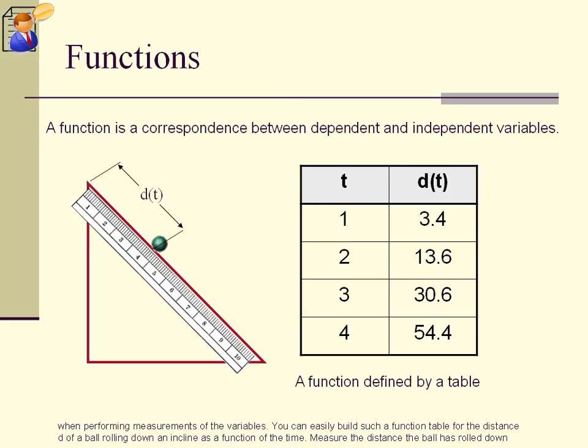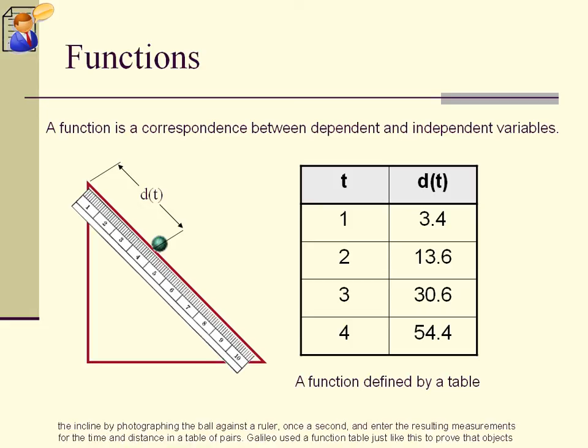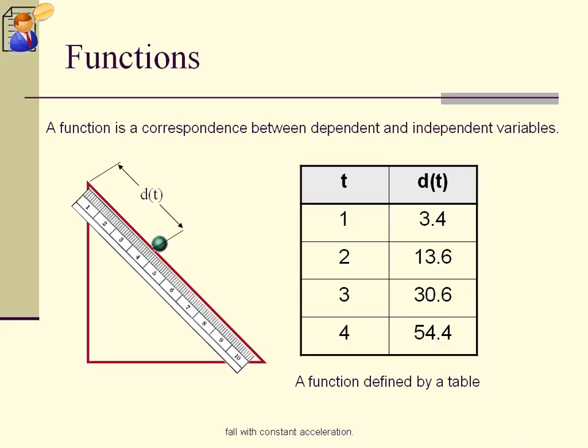You can easily build such a function table for the distance d of a ball rolling down an incline as a function of the time. Measure the distance the ball has rolled down the incline by photographing the ball against a ruler, once a second, and enter the resulting measurements for the time and distance in a table of pairs. Galileo used a function table just like this to prove that objects fall with constant acceleration.